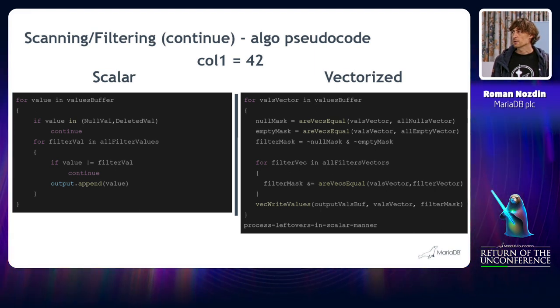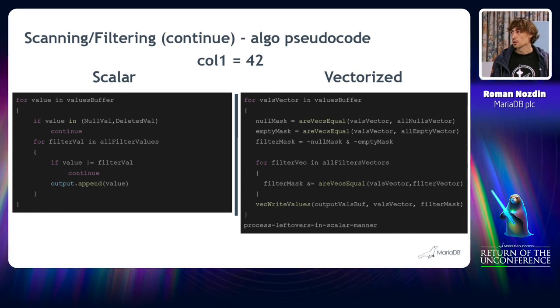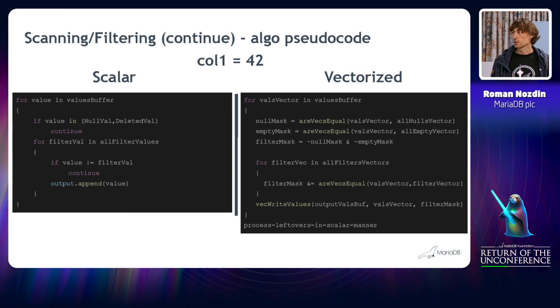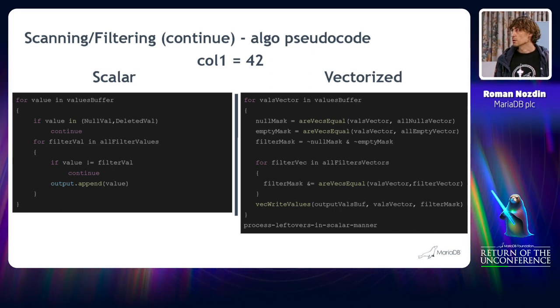And if they don't, we try to apply this filter, equal 42. And if the filter doesn't work, we either go to another value or we output the value into the output if it equals 42.